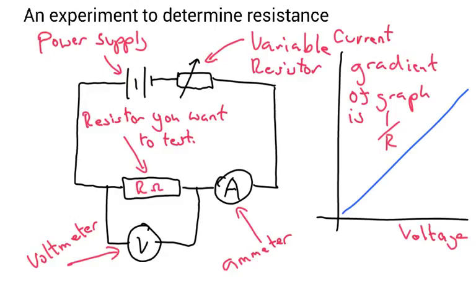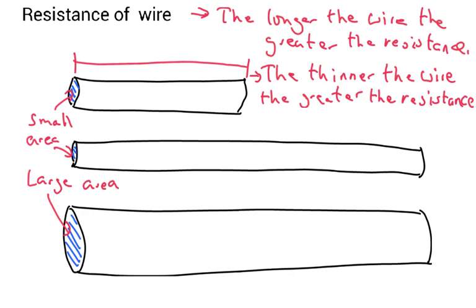When you plot a graph of this data, you find that the gradient of the graph is equal to 1 over R. So in an exam, if you find out what the gradient is, divide 1 by the gradient, and that will tell you what the resistance of this resistor is. So how does resistance vary in different wires?